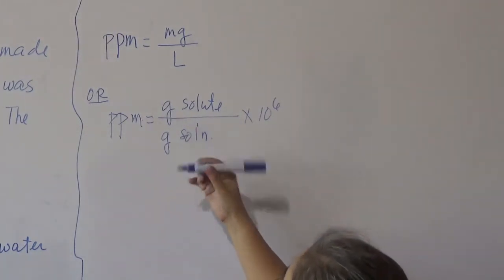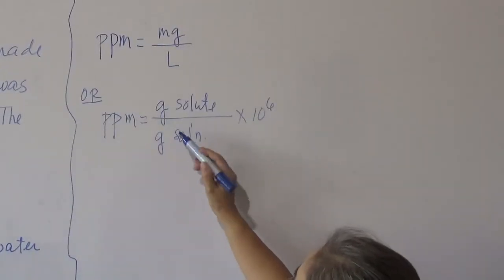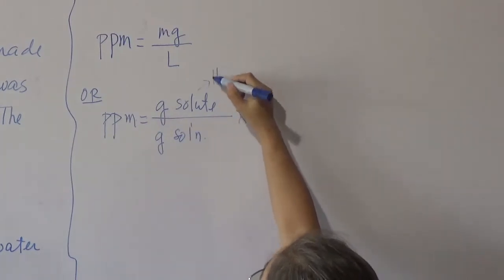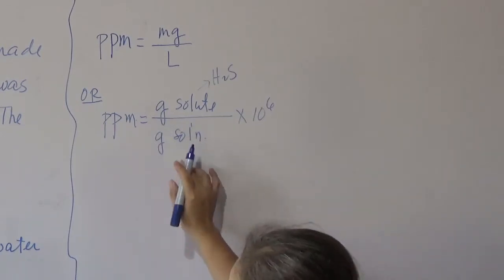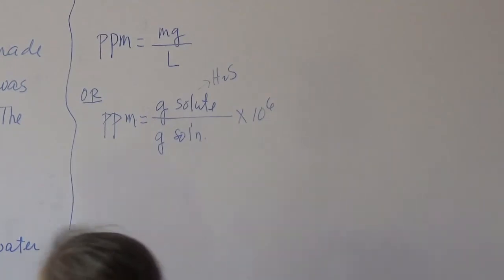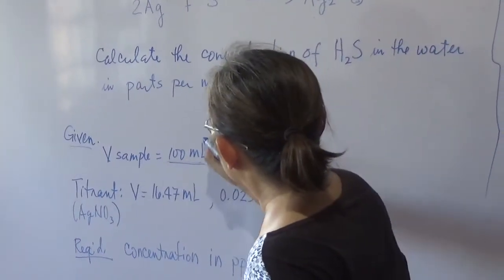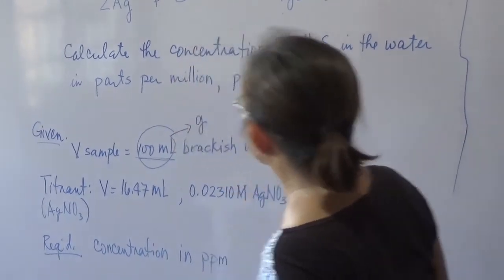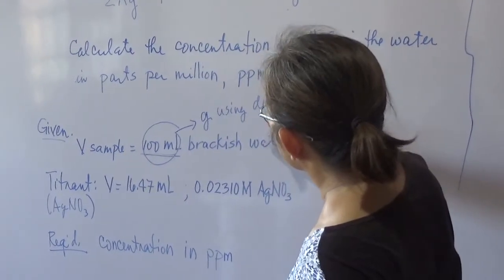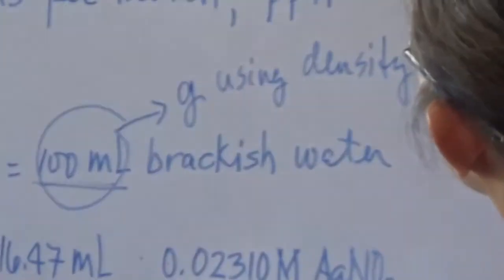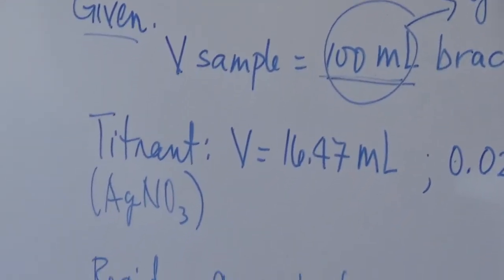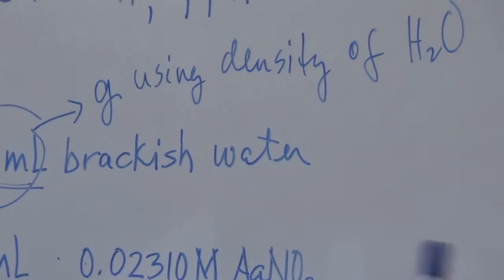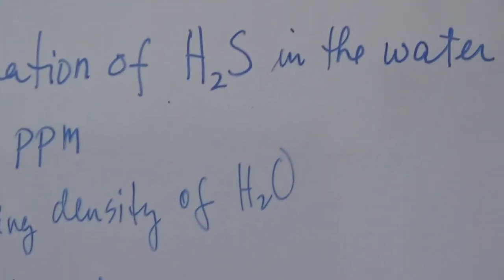Our target here is to compute the amount of the solute, which is hydrogen sulfide, in grams, and the grams of the solution. Take note — grams of the solution — what is given is volume. So we have to convert the 100 mL volume of the solution to grams using density. We will use the density of water, because even though there is a small amount of salt and sulfide, in general it's water. So we will use the density of water, which is 1 gram per mL.